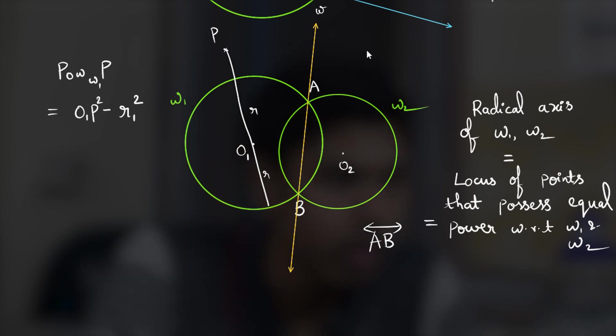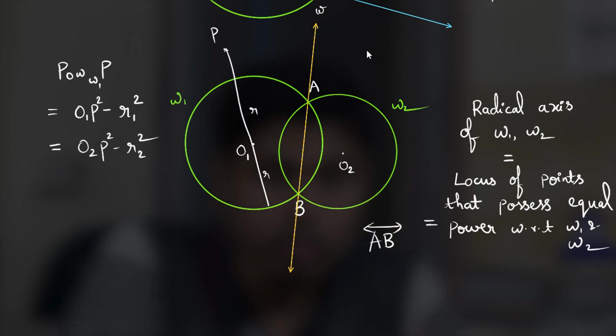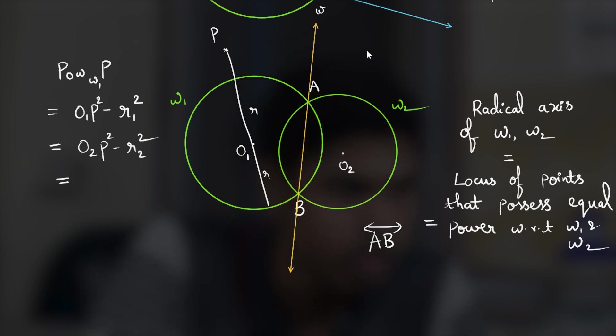Now this needs to be equal to O2P square minus r2 square for the same point P. That's when I can say that it lies on the radical axis of these two circles. So this is power of point P with respect to omega 2. This is essentially O1P square minus O2P square equals r1 square minus r2 square which is a constant. We know that this is given to us.